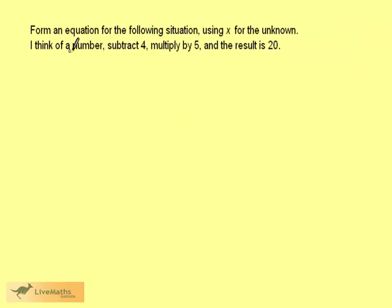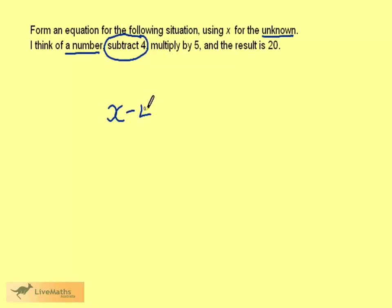We now want to form an equation for the following situation using x for the unknown. I think of a number, subtract 4, multiply by 5, and the result is 20. The number we think of is the unknown, so it's called x. The first thing we do to x is subtract 4. We then multiply by 5 — that means multiplying the whole of this number by 5. To ensure this is done, we encase the x minus 4 in a bracket, and put the 5 outside of the bracket.